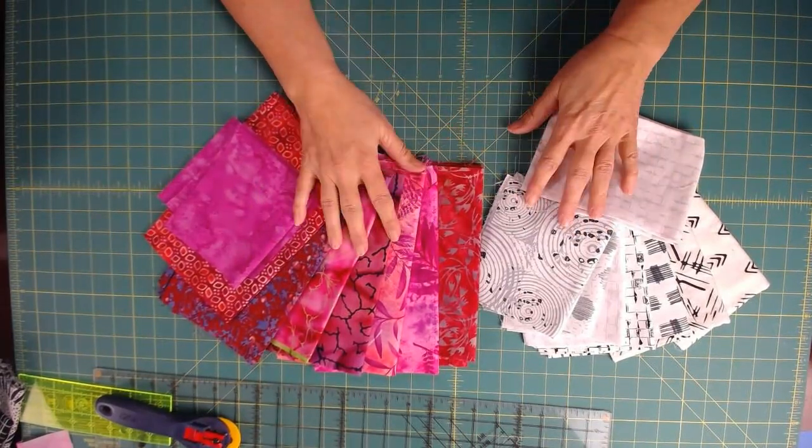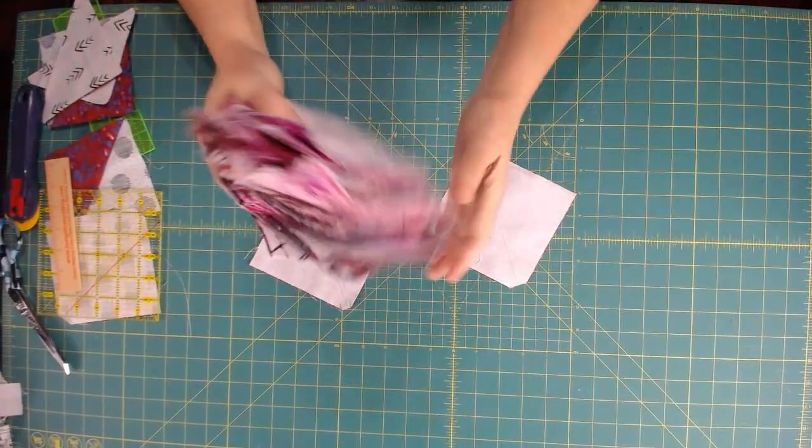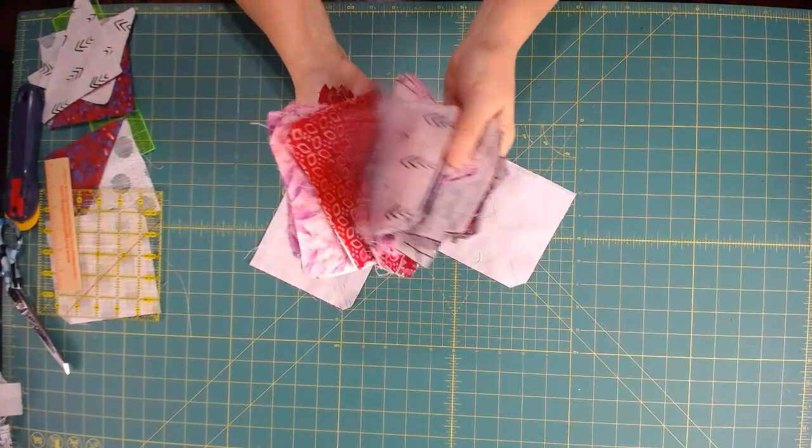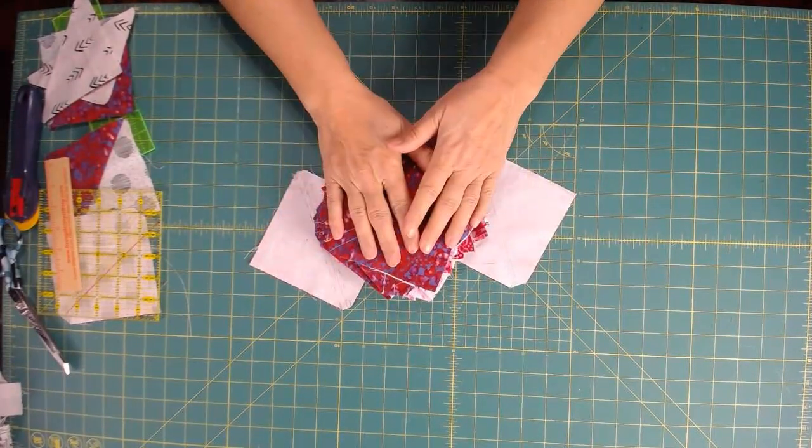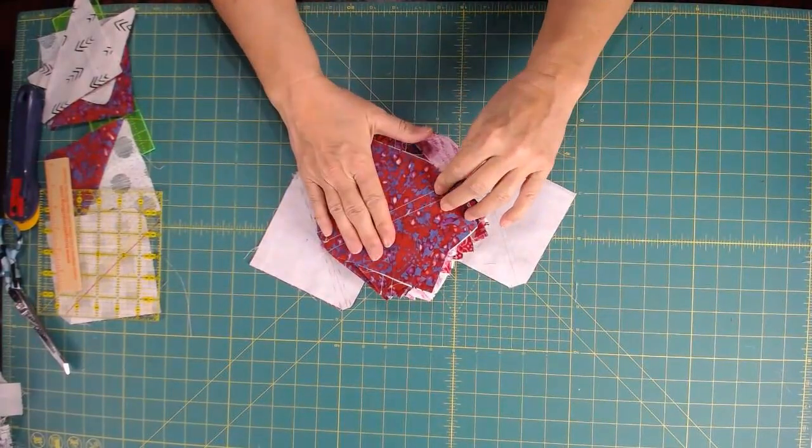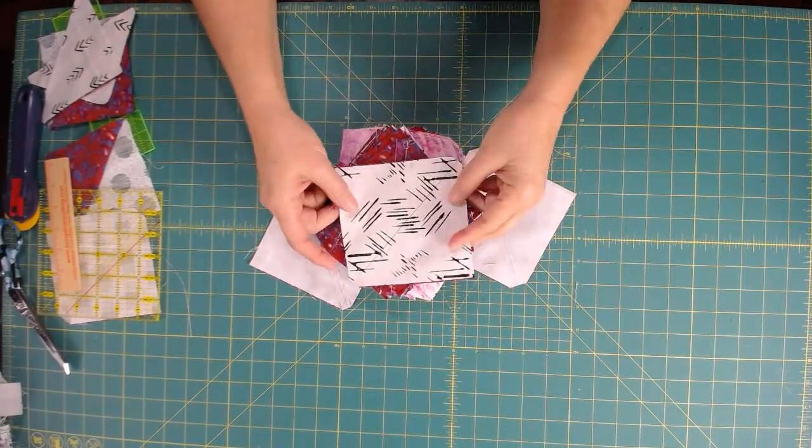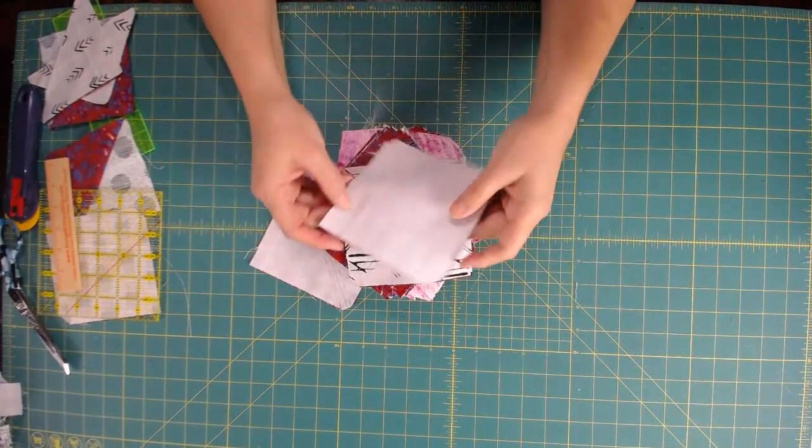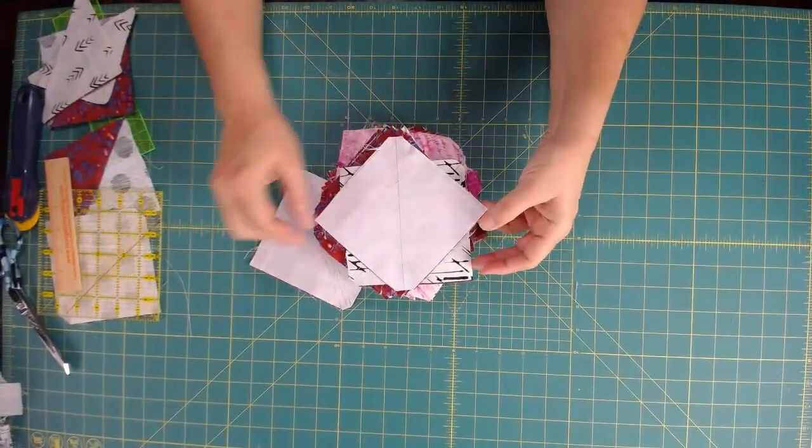This pile is all the charm squares sewn together, so I have a total of 168, which means I have 84 pairs. Each focal fabric is paired up with a background fabric, and you can see we put them together, draw a line from corner to corner.